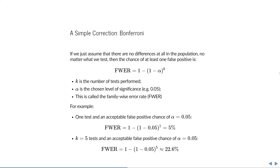If we have one test and we have an acceptable false positive rate of 0.05, then we plug in the numbers and we see that the result is the usual 5%. But if we have 5 tests, and we plug in the number 5 for k, we see that this chance grows to 22.6%, or more than a 1 in 5 chance of getting a false positive.